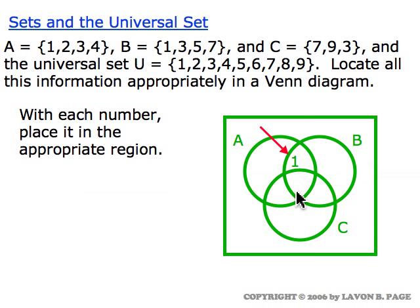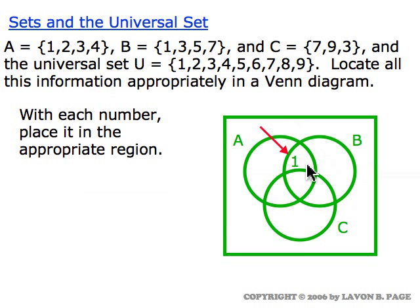Starting with the number one, we have no choice but to put it right here in the Venn diagram because one belongs to A, it belongs to B, but it does not belong to C. So we have to put it in the Venn diagram so that it's inside the A circle, inside the B circle, but outside the C circle. This little piece of the picture right here is the only part where we're showing things inside the A circle and the B circle but outside the C circle.